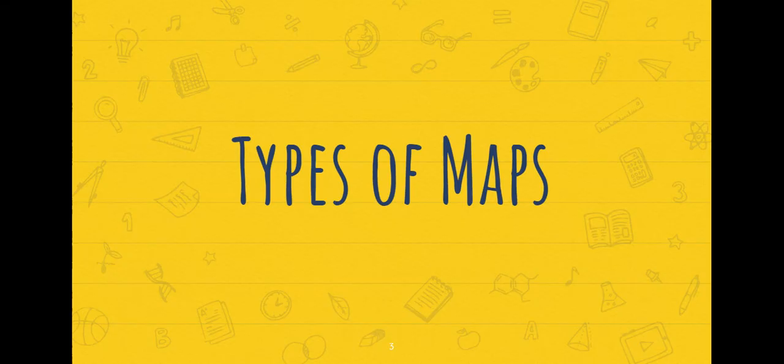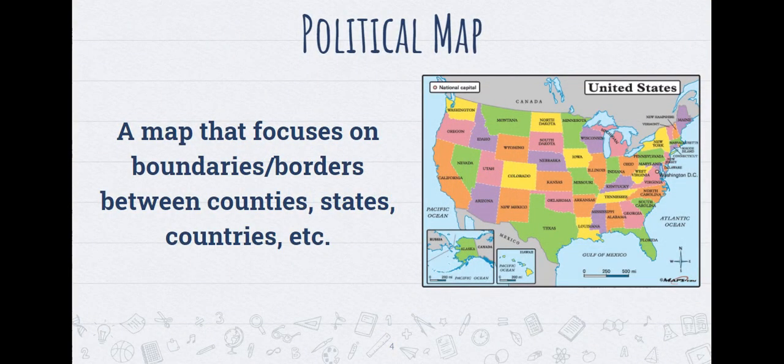Let's first start with types of maps. First we have a political map. This is any map that focuses on the boundaries and borders between countries, states, counties, anything like that. This map that you see on the screen shows us the different boundaries of different states and even countries where we see Canada and Mexico as well as the different states in the United States. We really just look at the boundaries and the borders here.